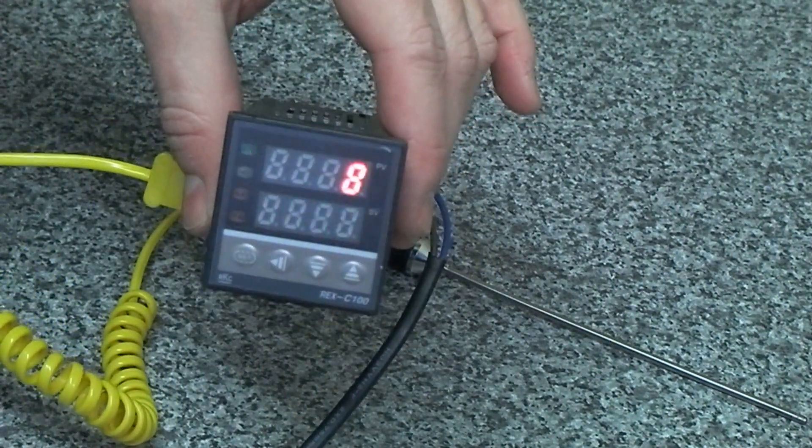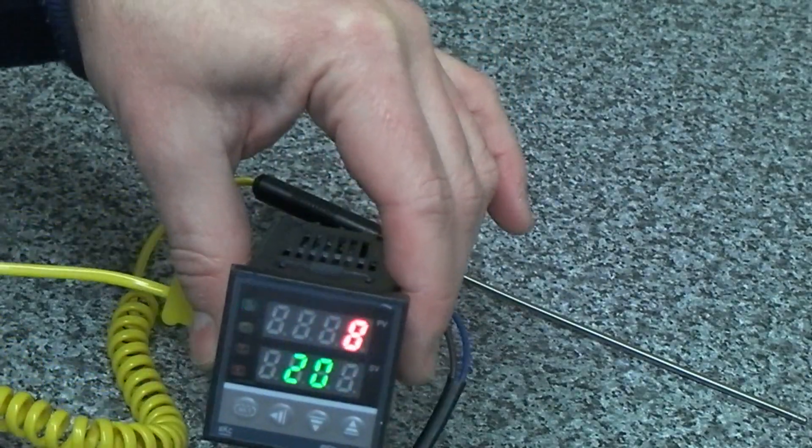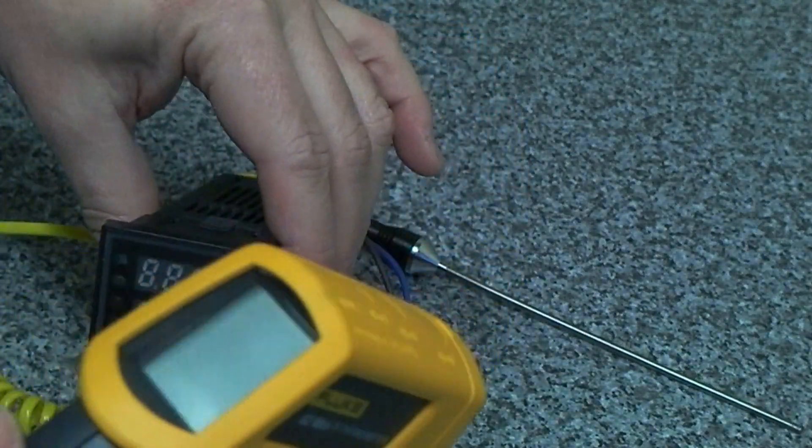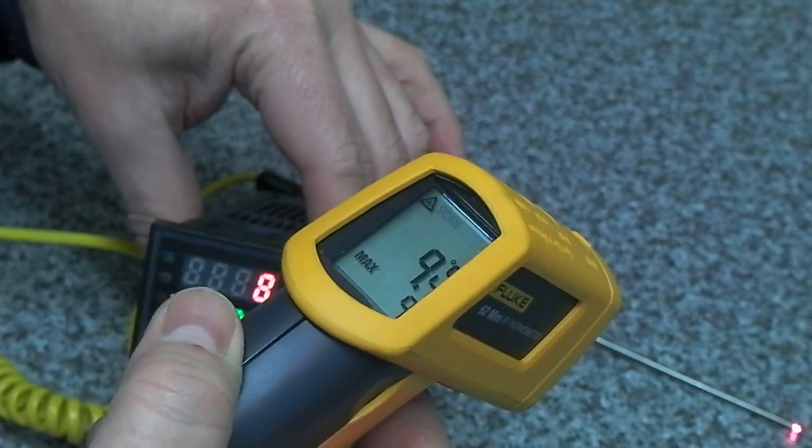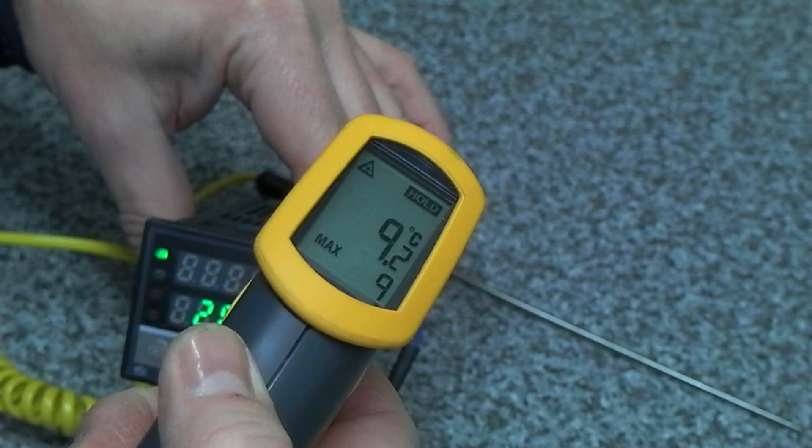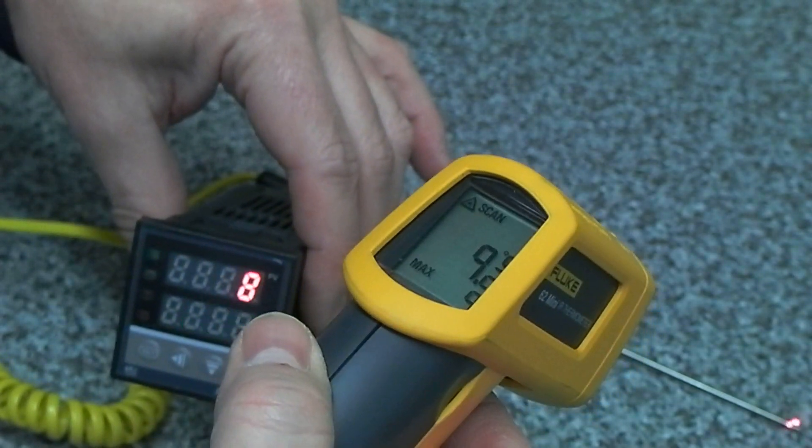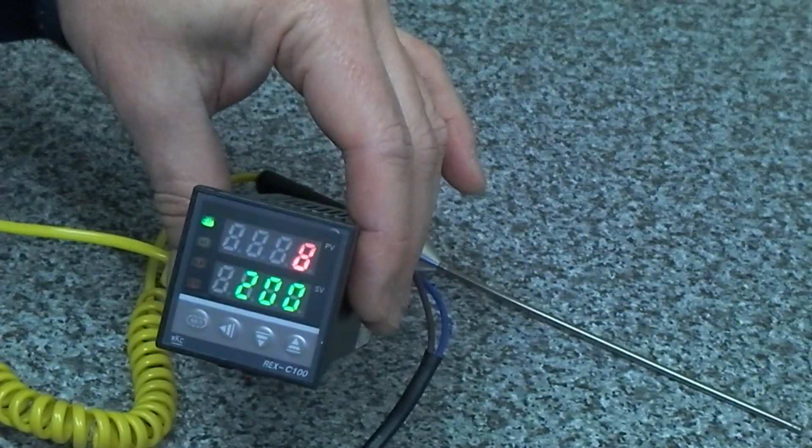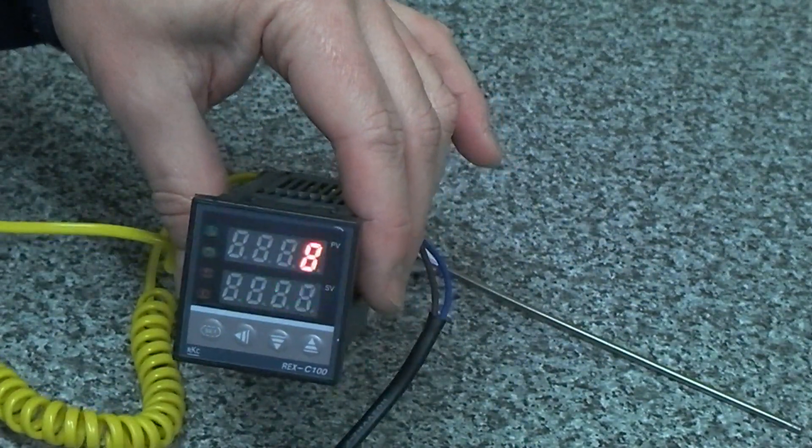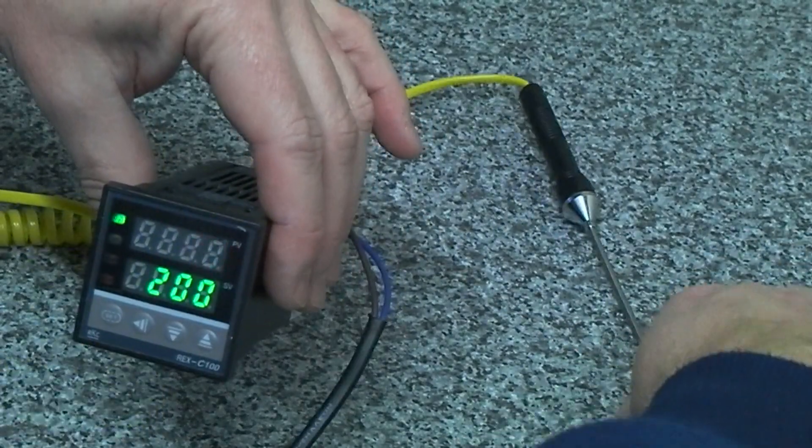I've got a Fluke 62 infrared gun here, and if I just point that down at the end of the probe, we're getting about nine. A minute ago it was on eight, so yeah, it's pretty accurate.